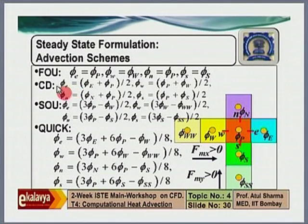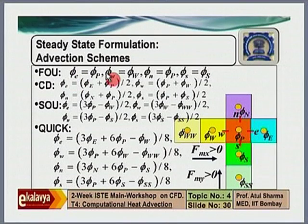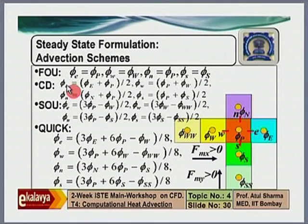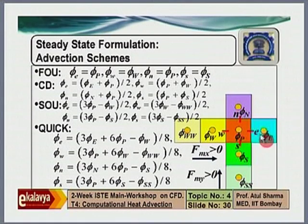When you apply the central difference scheme, you give 50 percent weight to both neighbors. In the first order upwind scheme you gave 100 percent weight to the upstream neighbor and 0 percent to the downstream neighbor. In the central difference scheme you give 50 percent weight to each — equal weight — which is good when there is pure diffusion. If you use this, then phi_e equals (phi_E + phi_P) / 2, and similarly for other face centers. In the second order upwind scheme, we give 150 percent weight to the upstream neighbor and minus 50 percent to the upstream-of-upstream neighbor.